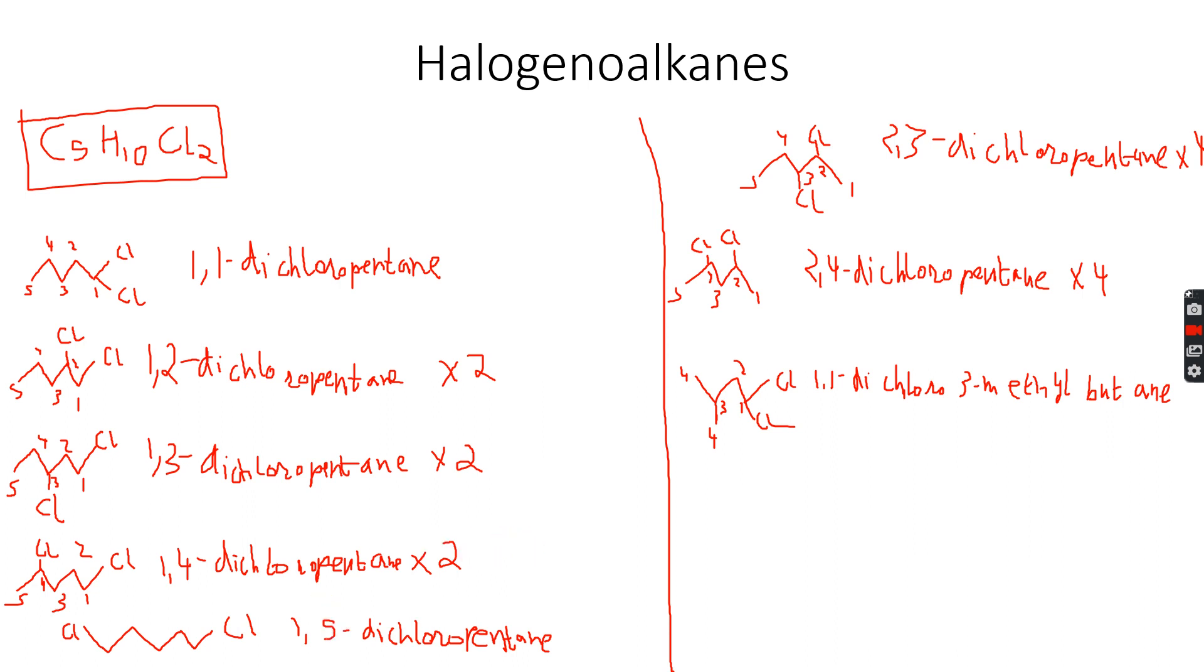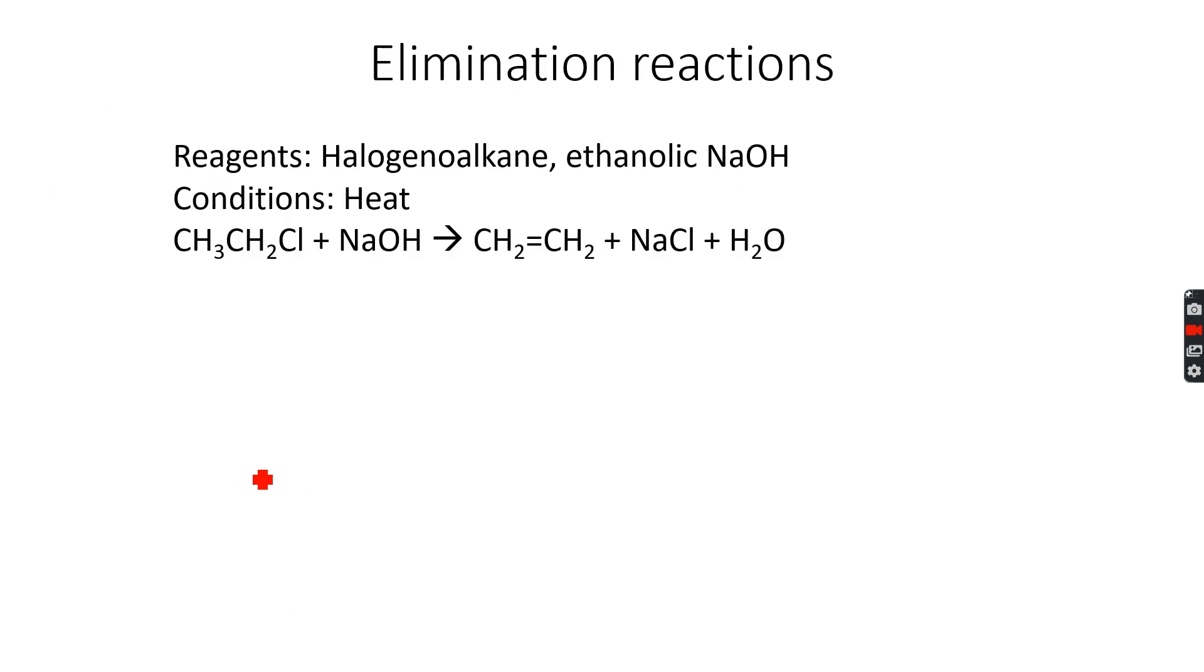So we are done with this one, now let's move further. Elimination reactions. Now halogenoalkanes undergo something called elimination in which they lose the halogen atom and they lose the hydrogen atom on the adjacent carbon atom. For example you have chloroethane in this example.